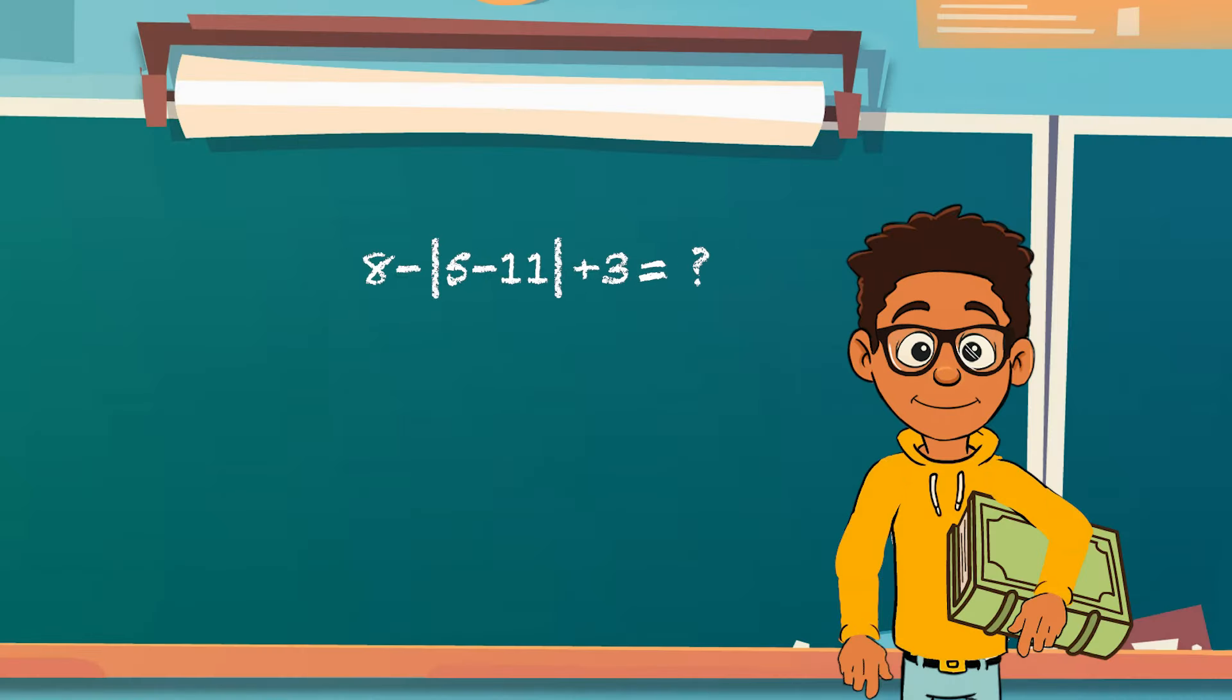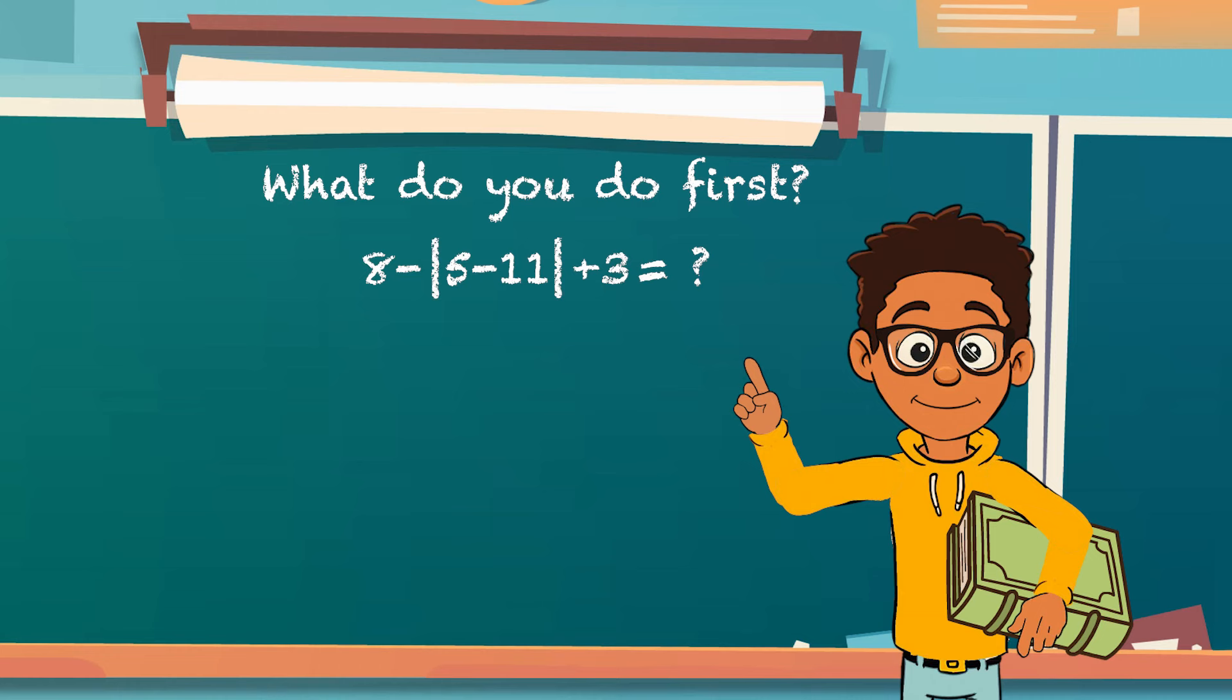Say you have an equation that looks like this: 8 minus the absolute value of 5 minus 11 plus 3. What do you do first? If you said, figure out the absolute value of 5 minus 11, you are correct.